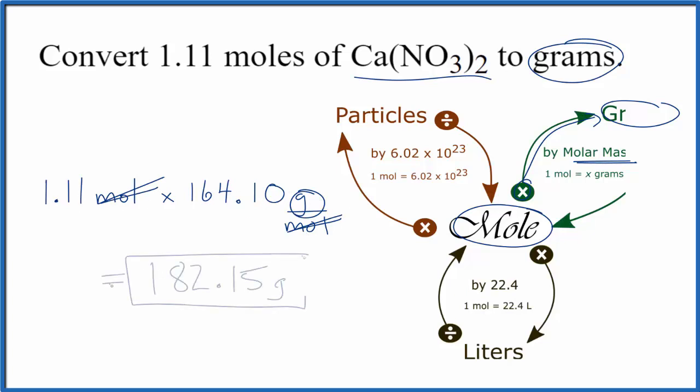We multiply and get 182.15 grams of calcium nitrate.